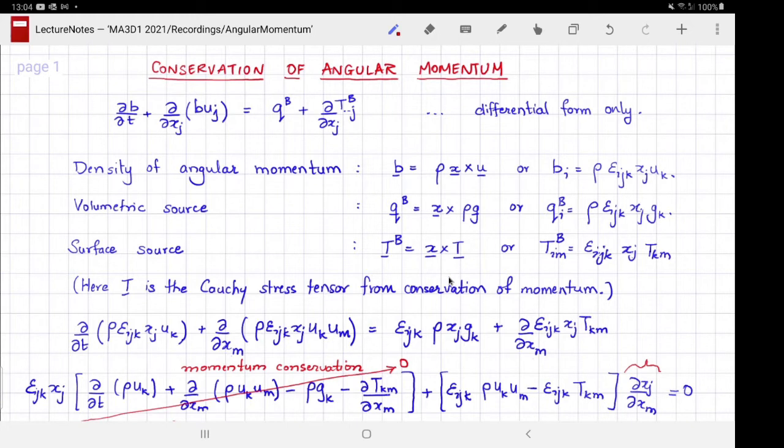If you do an area integral on the surface of this quantity, you would get the net torque exerted by the surface force on our volume omega. Simply substituting this into the differential form of the conservation equation leads to this equation.